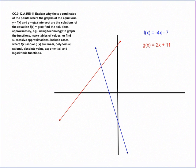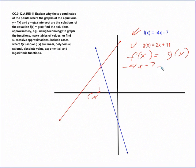What we have is a situation where the solution for this equation, as opposed to the solution for that equation, the point of intersection is in fact the solution for both. Since it is the same point, it stands to reason that they will both have the same x-coordinate. One way to solve this would be to just simply do what the standard says to do: set f(x) and g(x) equal to each other. So then, in this situation, it's -4x - 7 = 2x + 11.